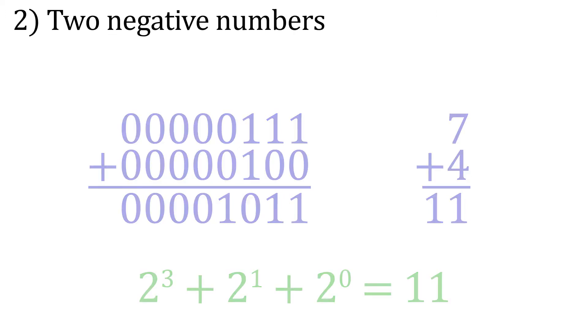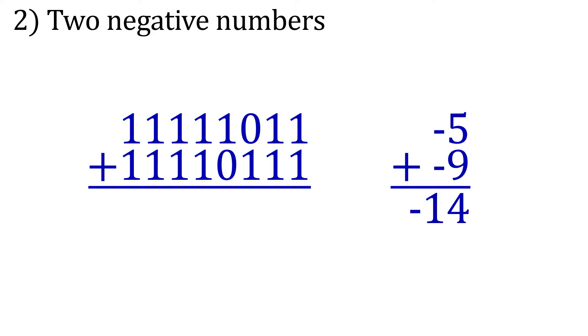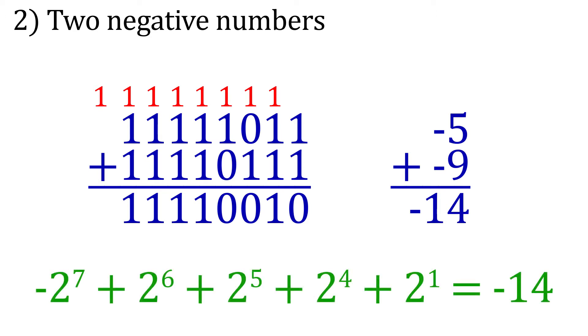Now let's add two negative numbers. Here we have negative five plus negative nine. These are in two's complement, of course, because they are negative. Again, we're going to add these numbers like we have done before. Here, we have a ninth bit that was carried from our last bit of addition. This carry bit can just simply be discarded. The leading bit is one, so our answer is negative, as it should be. So let's check our answer. Alright, good. It looks like we have negative fourteen.